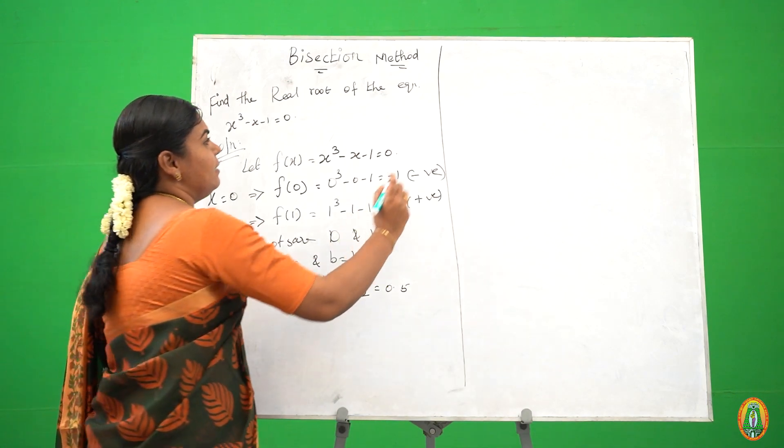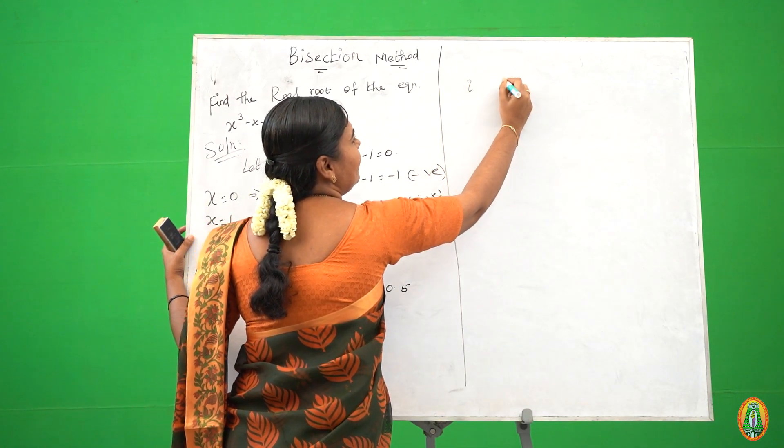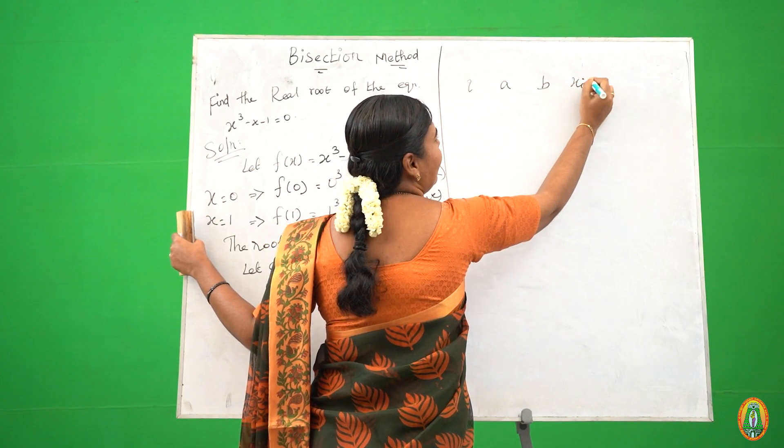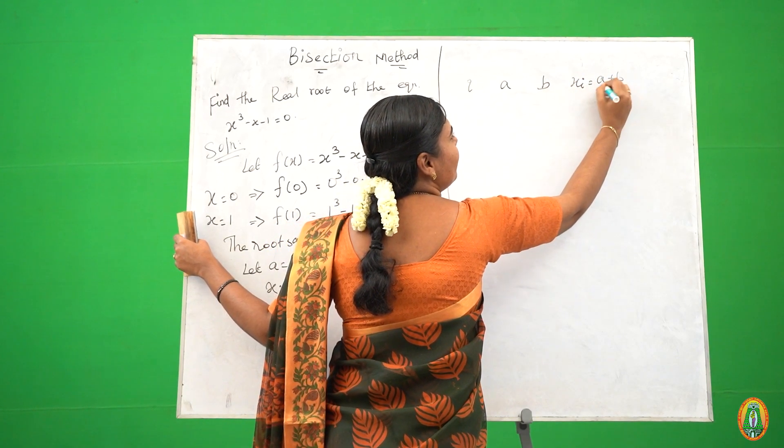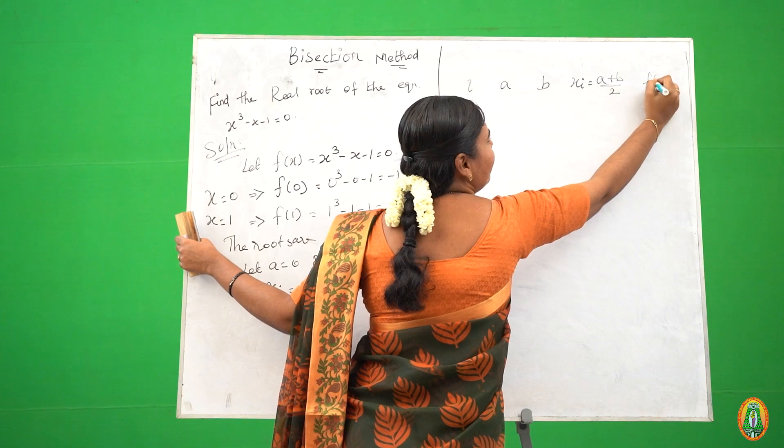So next we consider i, a, b, xi (a plus b by 2), f of xi. Let us, first we take i is equal to 1.